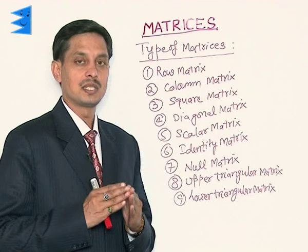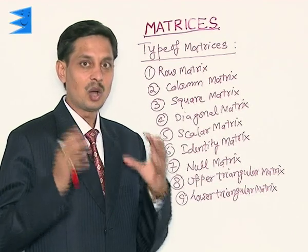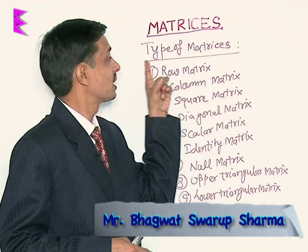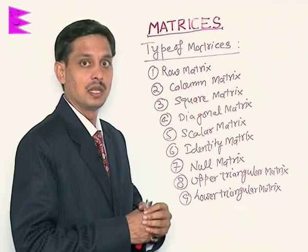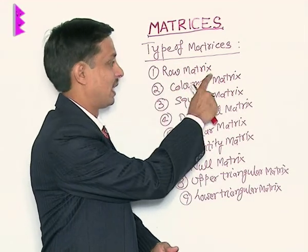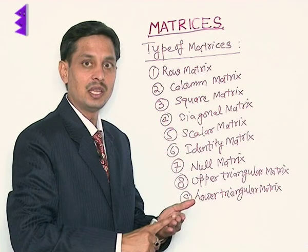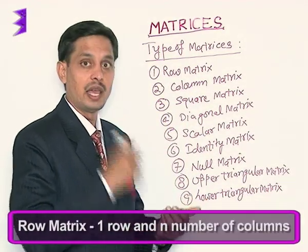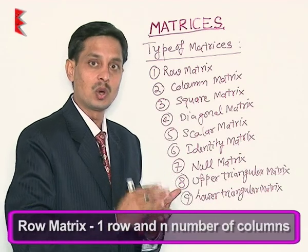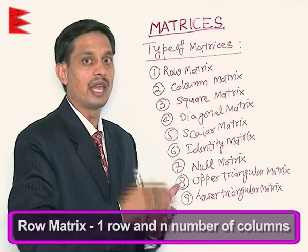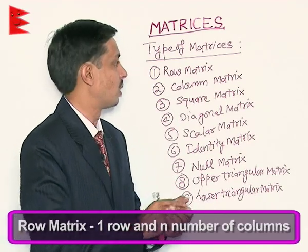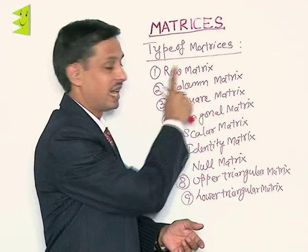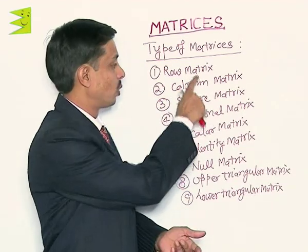I want to discuss how many types of matrices are possible. If we discuss the types of matrices, the first one is the row matrix. If it has one row and n columns — it may have one column, two columns, three columns, or any number of columns — but the row will be only one. So if a matrix has a single row, it is a row matrix.